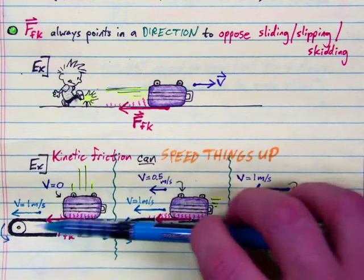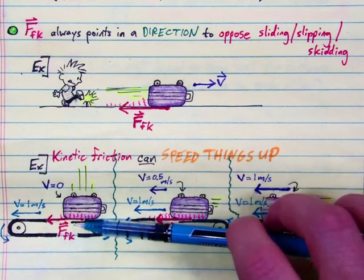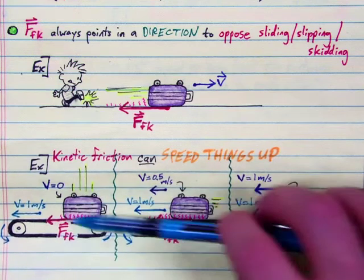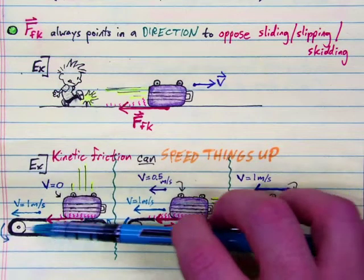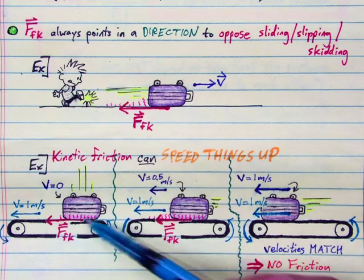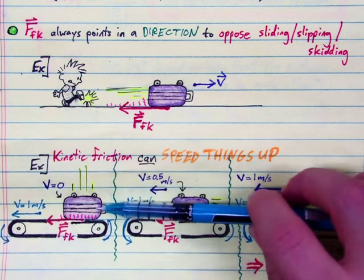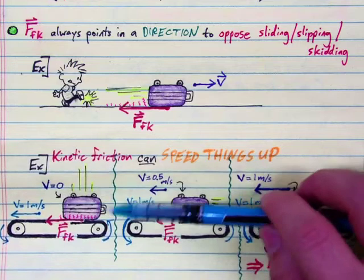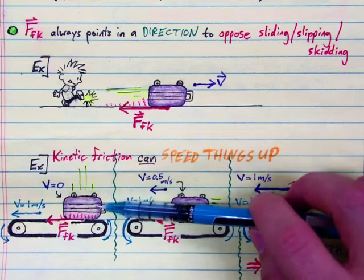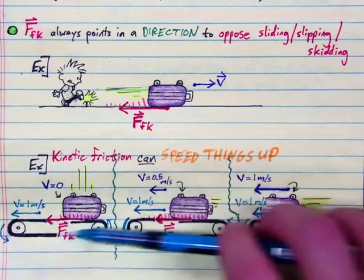So the belt will be outrunning the bag here, sliding, rubbing against the underside of your luggage. As it does so, it's going to generate a force of kinetic friction on the bag, trying to get the bag to catch up with the belt. It's also going to be generating heat here as the belt rubs against the underside of the bag, and that force of kinetic friction on the bag, well, forces cause acceleration. The bag is going to begin accelerating to the left as it tries to catch up with the belt moving underneath it.